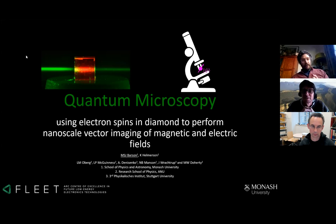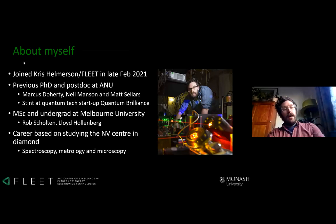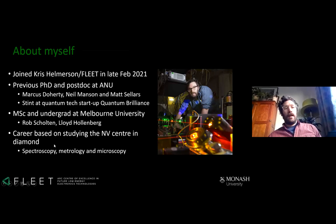I'm going to talk about using electron spins in diamond to perform vector nanoscale magnetic and electric field imaging. I recently joined Fleet in February, was previously at ANU for the last eight years, and did a small stint at a quantum tech startup called Quantum Brilliance. Before that I was in Melbourne at Melbourne Uni, working in Rob Sholton and Lloyd Hollenberg's group, and I've basically looked at the NV center for my entire academic career.